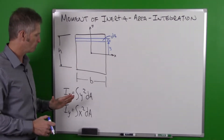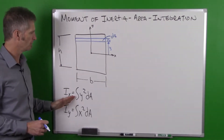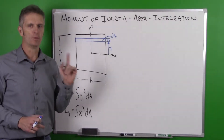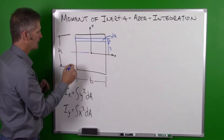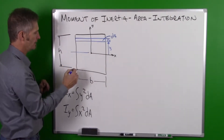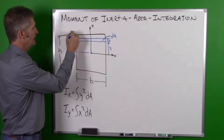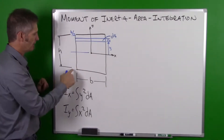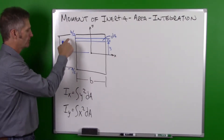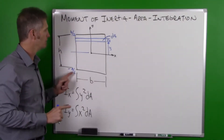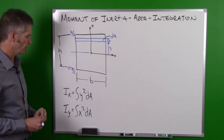Now that we have this set up we can look at our integration. We need to get our limits of integration. Since our x-axis is in the middle, the upper limit is h/2 and the lower limit is −h/2. So we integrate from −h/2 to h/2 in the y direction.